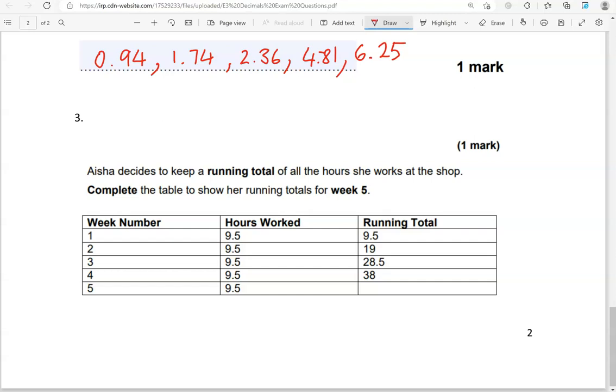Aisha decides to keep a running total for all the hours she works at the shop. Complete the table to show her running totals for week 5. So, we've got week number 1, hours worked 9.5. Running total is 9.5 because that's the total number of hours that they have worked for that first week. Then, we've got week 2, hours worked 9.5 again. Running total is 19. So, that's 9.5 that we had at the end of week 1. Adding to that 9.5 that have been worked in week 2.